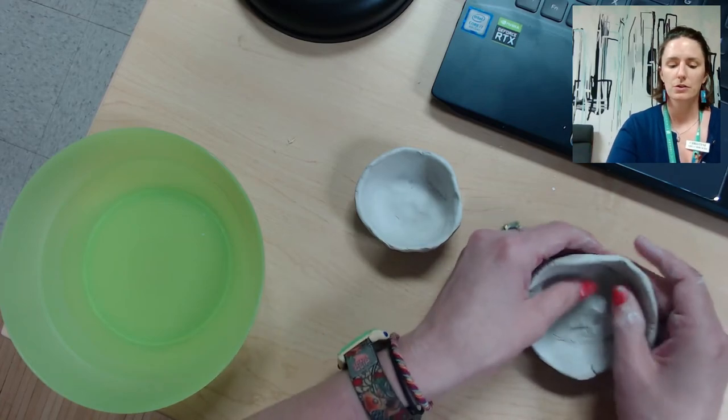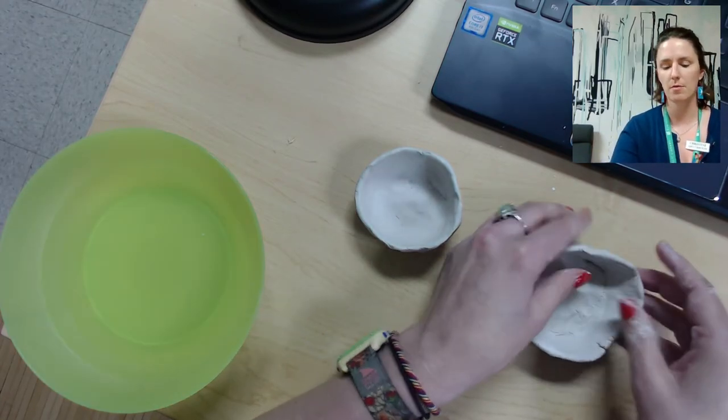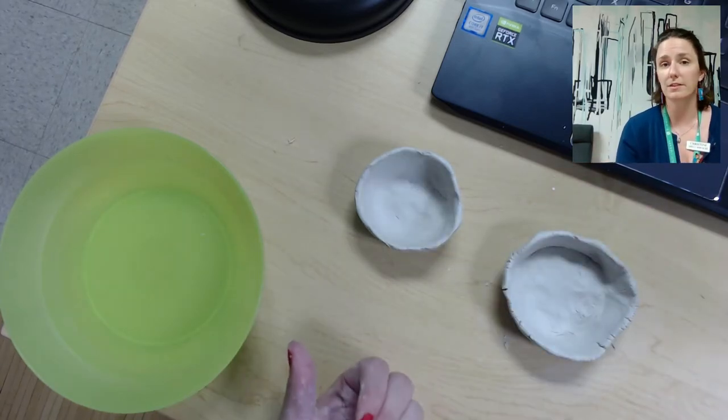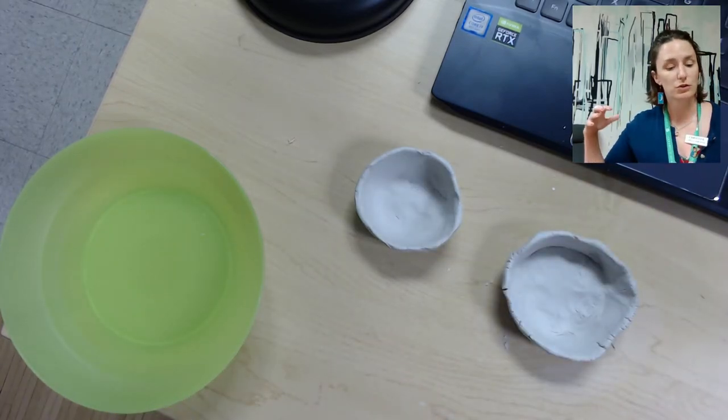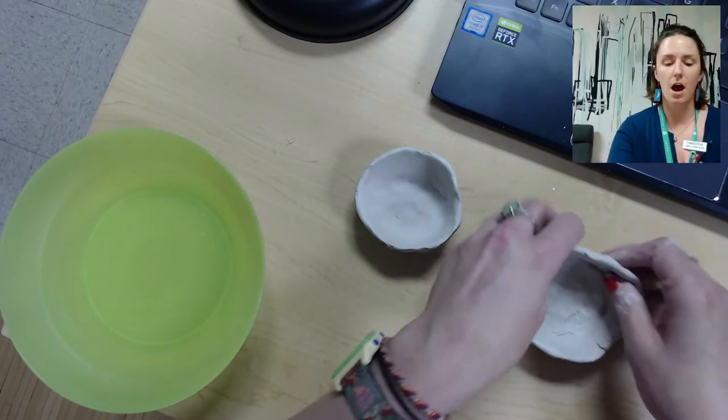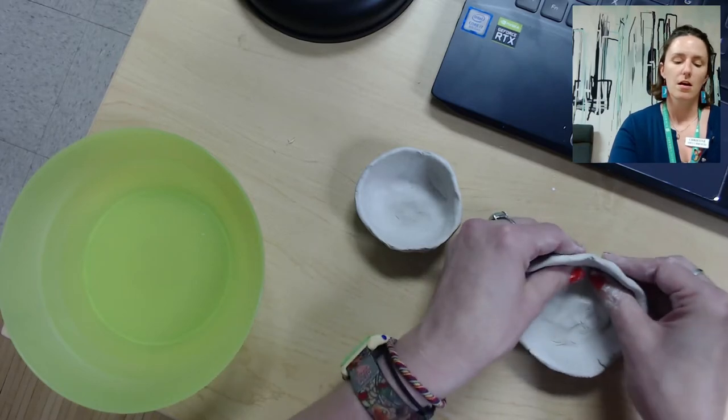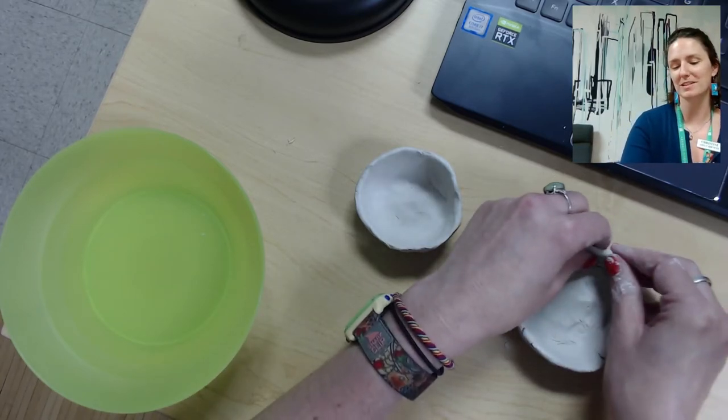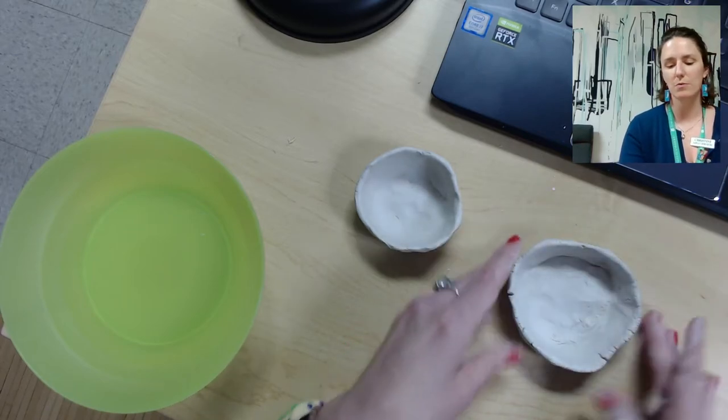Alright, so you're just going to keep pressing it until it's the shape that you like. If you don't like the shape that you're coming up with, you can just start over by smashing it all together and rubbing it together. There are no mistakes, so you can start over quite simply, quite easily with the clay.